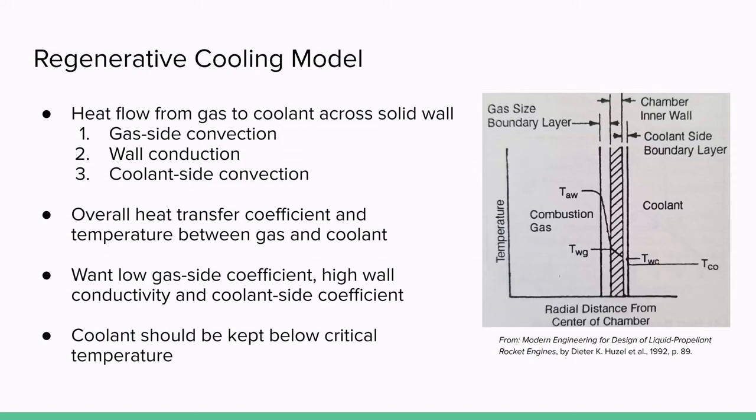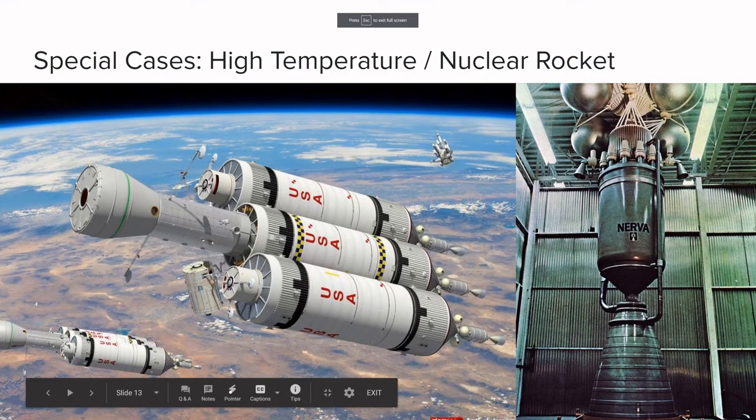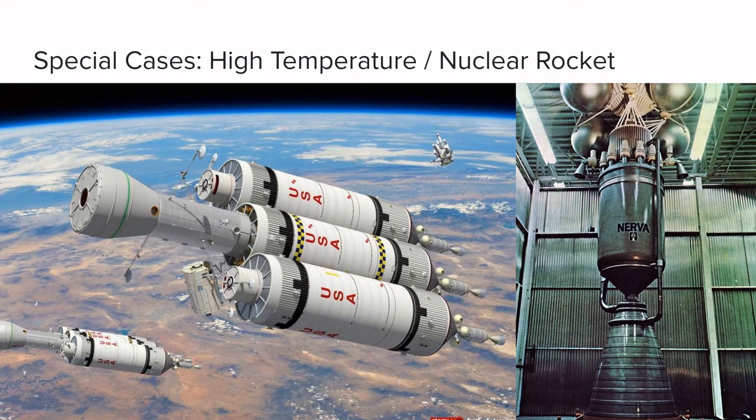An interesting point is that the coolant should be kept below its critical temperature or else a vapor film layer will develop on the coolant side, which will prevent proper heat flow. On to our first special case, high temperature nuclear rockets. On the left, you can see an image of a NASA concept. On the right, you can see the Nerva project.